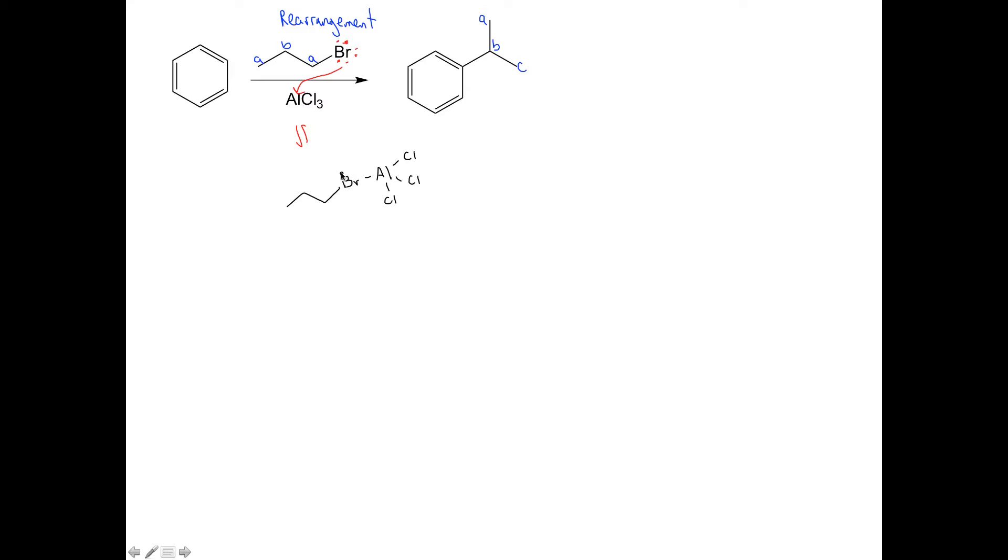The consequence of that is this bromine had three lone pairs. Now it only has two. Therefore that bromine has a plus. And now this aluminum species got a new set of electrons from that bond, so that has a minus.